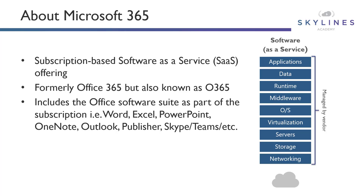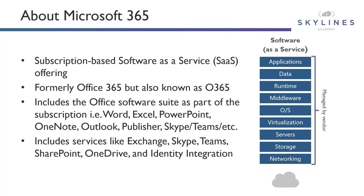It's the same Office we know and love. It includes PowerPoint, Word, Excel, Outlook, etc., and includes additional things like Skype for Business, Teams, and OneDrive. Furthermore, those back-end infrastructure services we were used to having on-premises — like Skype for Business, Exchange, and SharePoint — are all now included, along with additional cloud services like OneDrive, Teams, and Active Directory integration through Azure Active Directory.